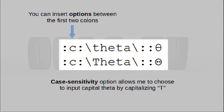In this case, I used the C option, which means case sensitive. The reason why I use it here is that I wanted to see a capital theta if I typed in the word with a capital T. Of course, up to this point, these are just simple string substitutions.